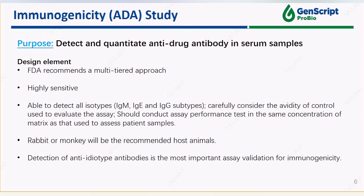Regarding the immunogenicity study, due to the size of some clinical trials and the importance of testing patient samples at several time points, the FDA recommends a multidisciplinary approach. A rapid screening assay should be used initially, and any sample testing positive should then undergo a confirmatory assay, such as ligand or antigen competition assay. Clinical reviews must consider whether the immune response alters the serum levels of the product, affects the clinical safety and efficacy, or both.